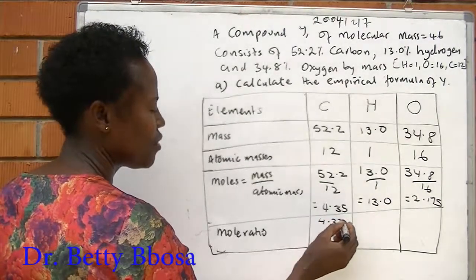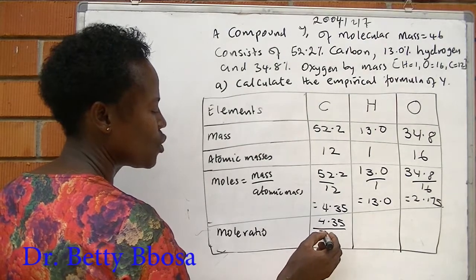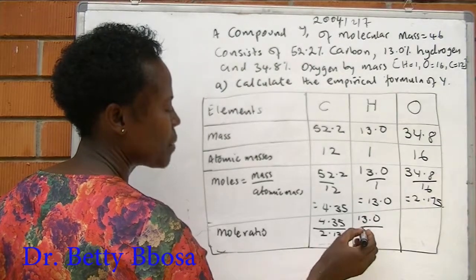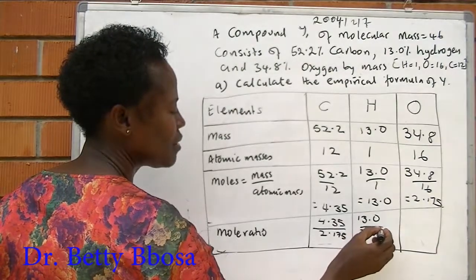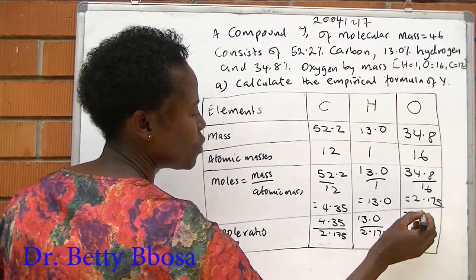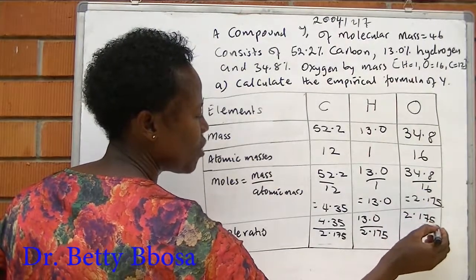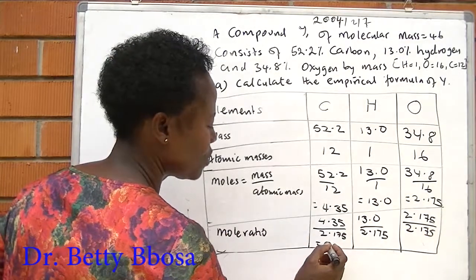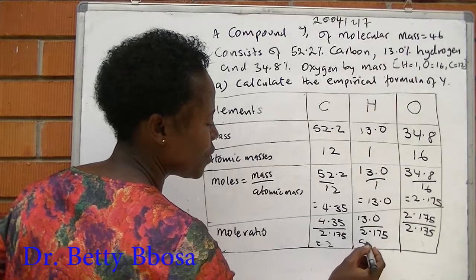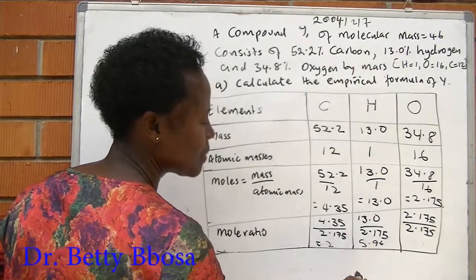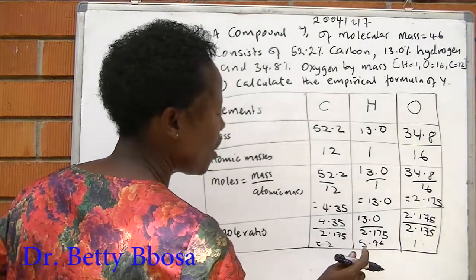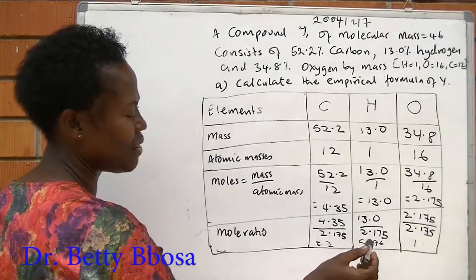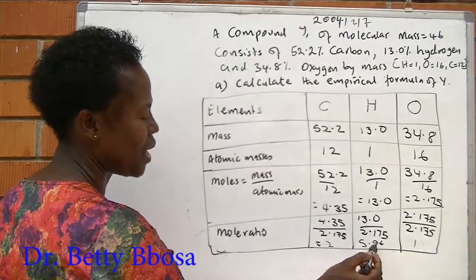This is 4.35 divided by 2.175, 13.0 over 2.175, and 2.175 over 2.175. The first one is 2, the second one is 5.96, the third one is 1. Always, mole ratio, there are whole numbers. If you get a value which is greater than 5, you round off.